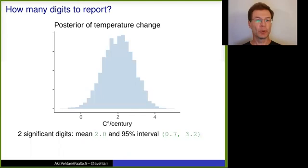We could report two significant digits. This is much better. That's why I'm using now green color. So mean 2.0 and 95 percentage interval going from 0.7 to 3.2.